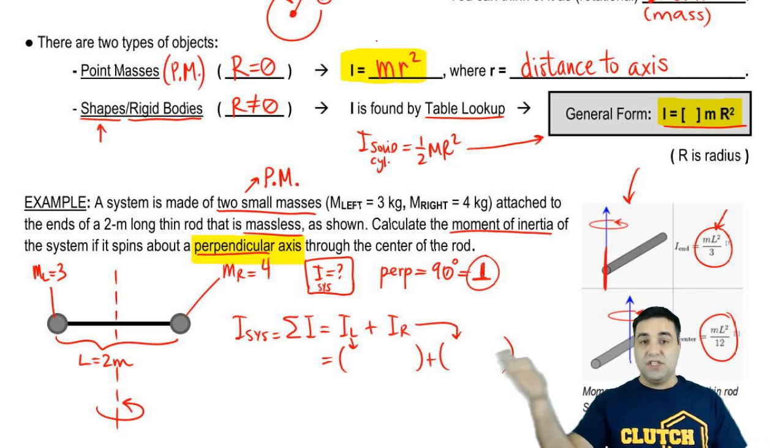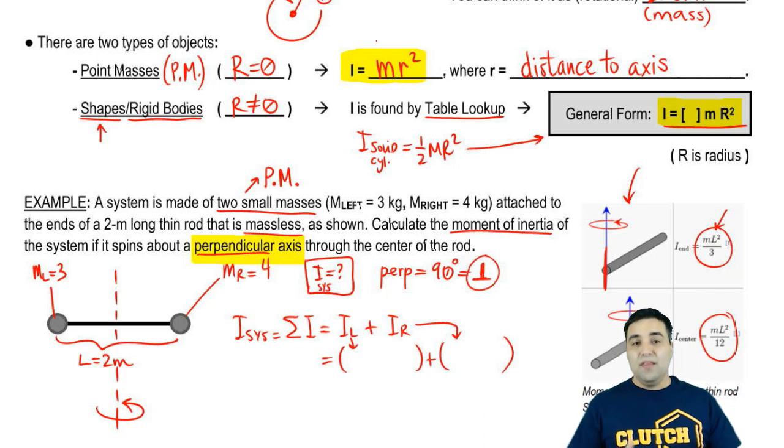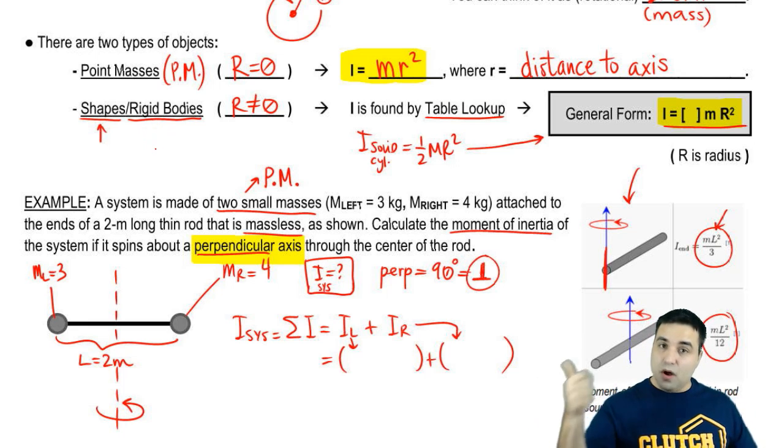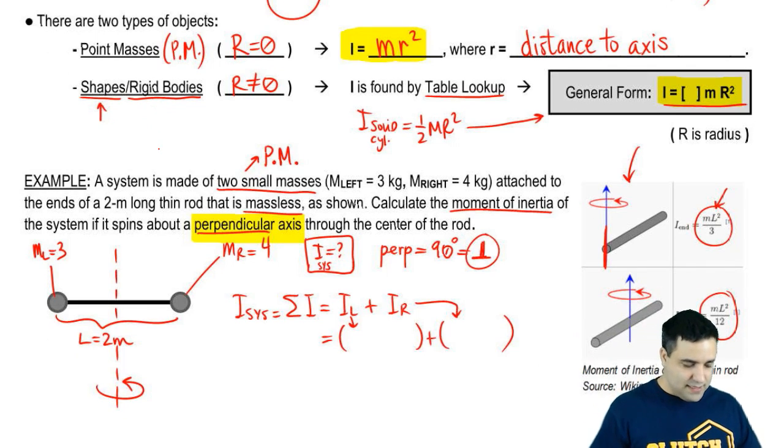So there's two clues here. One, it says small. That's a dead giveaway. And the other one is it didn't indicate a shape. So if I tell you a small solid cylinder, it's still a rigid body because I said that it was a solid cylinder, I gave you the shape. Here, I tell you it's small, and I don't give you a shape. It's a point mass.